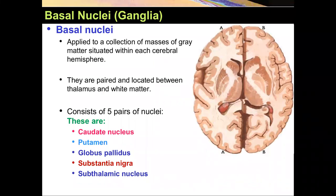Basal ganglia refers to a collection of masses of gray matter situated within each cerebral hemisphere. They are paired — one on the left, one on the right — located between the thalamus and white matter. It consists of five pairs of nuclei: caudate nucleus, putamen, globus pallidus, substantia nigra, and subthalamic nucleus.